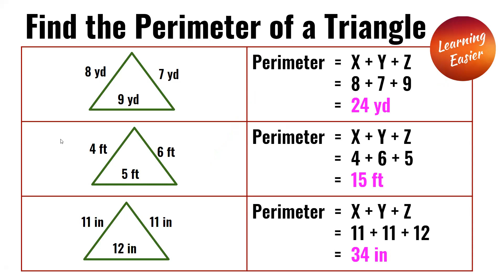In the second triangle, the side lengths are 4 feet, 6 feet, and 5 feet. 4 plus 6 plus 5 is 15 feet, which is the perimeter.